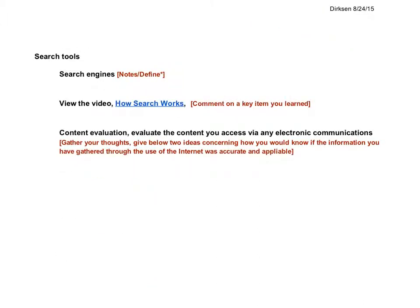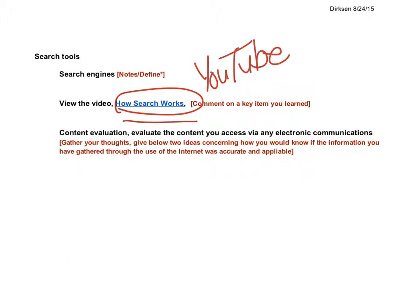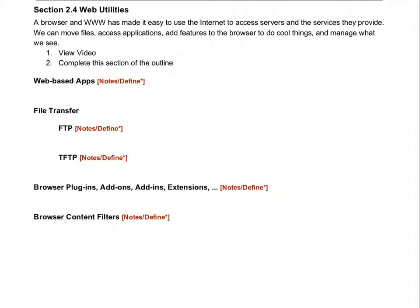Search tools — it wouldn't hurt to review them. If you weren't sure the first time, you can rewatch, and there are other videos by Google and others on YouTube about search. Content evaluation: we need to be very conscious of that. Utilities we already covered. Plugins — adding things to the browser to do things. Some places define them more specifically, but basically we're talking about the same kinds of things.